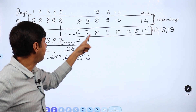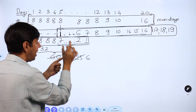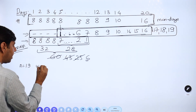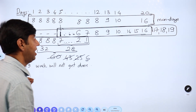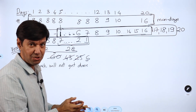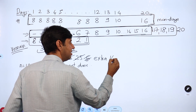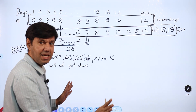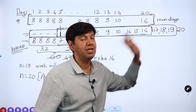With n = 19: the series 19, 18, 17 ... down to 1 is done, but 6 man-days still remain, so the work cannot be finished. The moment I start with 20 men, that first day 20 man-days of work is done — the remaining 6 are covered, and in fact 14 extra man-days are done beyond what's needed. So with n = 20 the work can easily be done, but with n = 19 it cannot. Therefore the minimum value of n is 20.